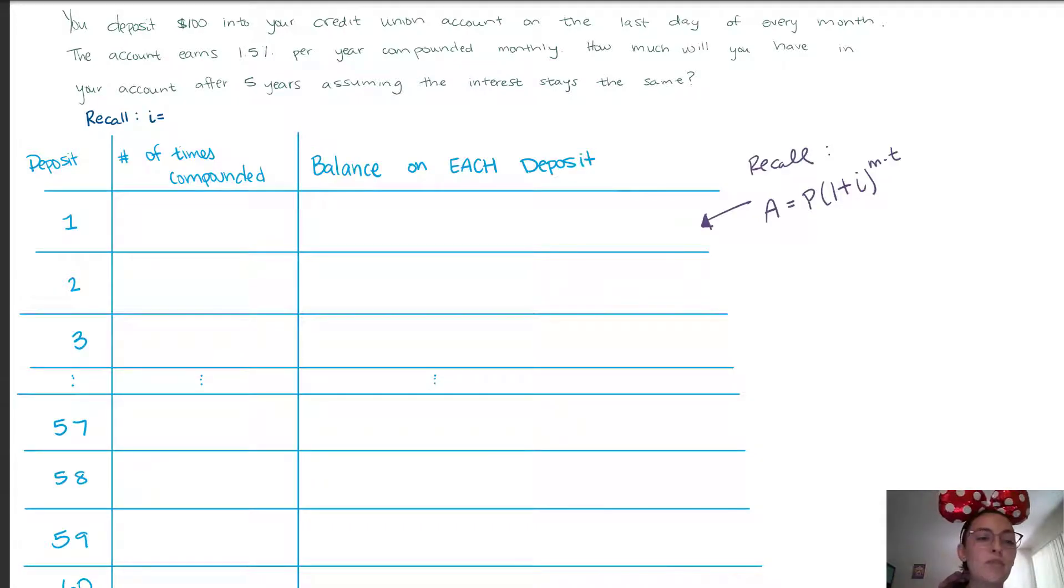Every month we're inputting $100. What we need to see is how often is that deposit compounded, because that's how much that deposit is going to grow. The very first deposit that we put into our account we put it in at the end of the first month, so that means it's going to compound 59 times. It wouldn't compound 60 because as we've learned before when you first put in the money you don't gain any compound from that initial deposit. You didn't let it sit long enough to accrue any interest.